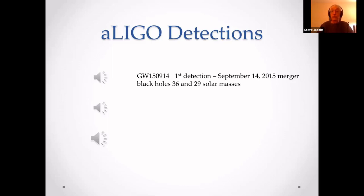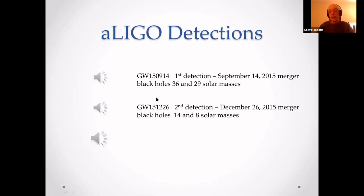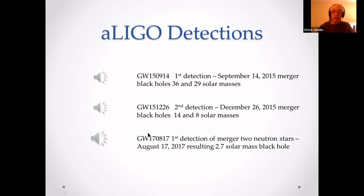That first detection was two black holes of 36 and 29 solar masses — solar masses being the mass of our sun. And my favorite detection: two neutron stars on August 17th, resulting in a 2.7 solar mass black hole.